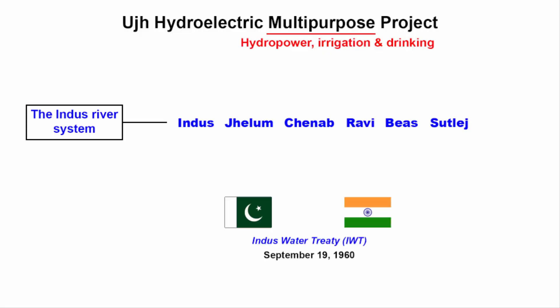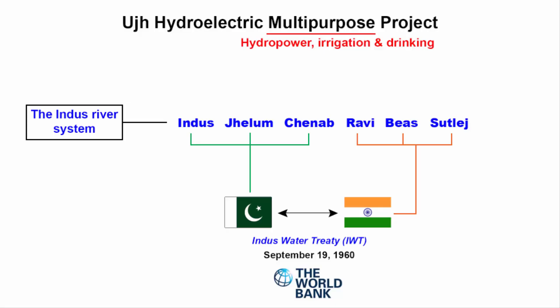In 1960, India and Pakistan signed the Indus Water Treaty, with the World Bank as a third-party representative, after eight years of negotiation. The treaty governs the distribution of waters of the Indus and its tributaries between the two countries. Following the partition of India in 1947, the water of the Indus river system was divided: the three western rivers — Indus, Jhelum, and Chenab — went to Pakistan, while the three eastern rivers — Sutlej, Ravi, and Beas — were given to India.